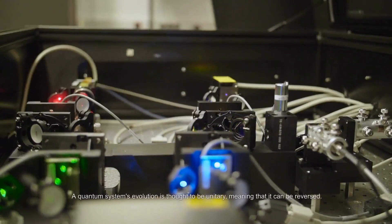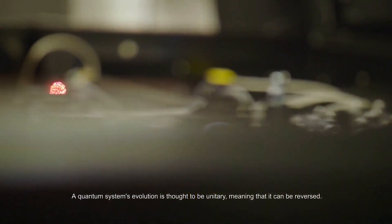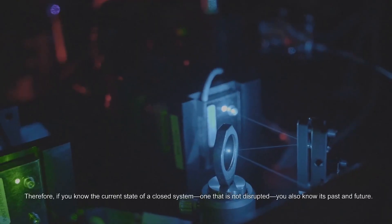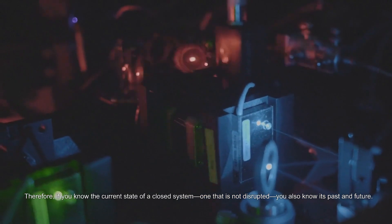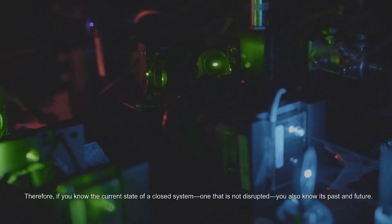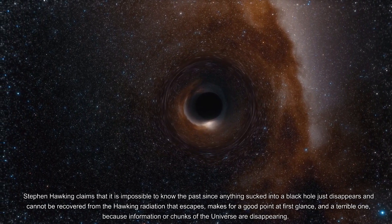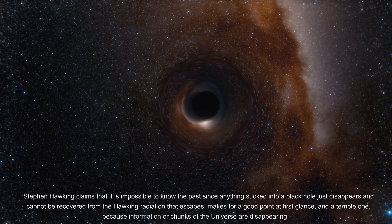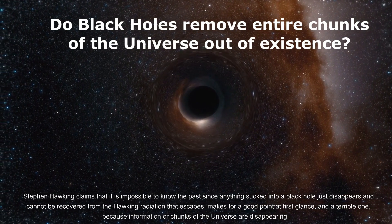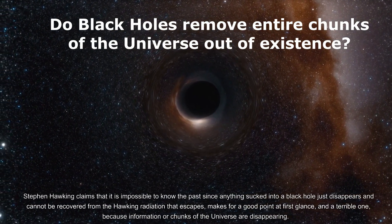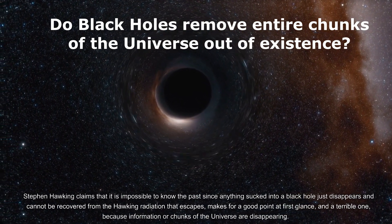A quantum system's evolution is thought to be unitary, meaning that it can be reversed. Therefore, if you know the current state of a closed system—one that is not disrupted—you also know its past and future. Stephen Hawking claims that it is impossible to know the past since anything sucked into a black hole just disappears and cannot be recovered from the Hawking radiation that escapes. Makes for a good point at first glance, and a terrible one, because information or chunks of the universe are disappearing.